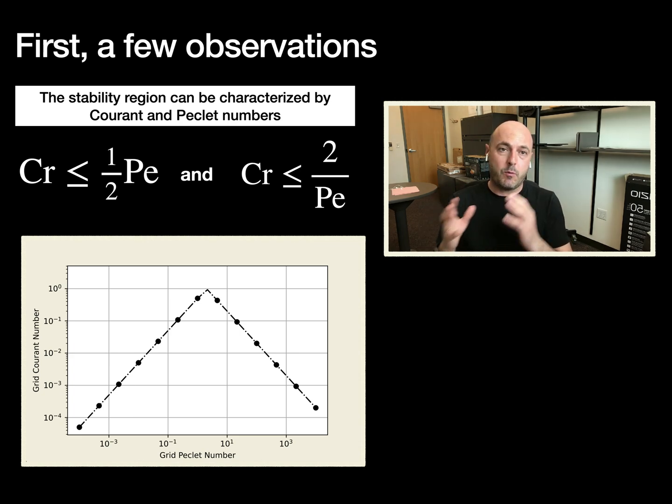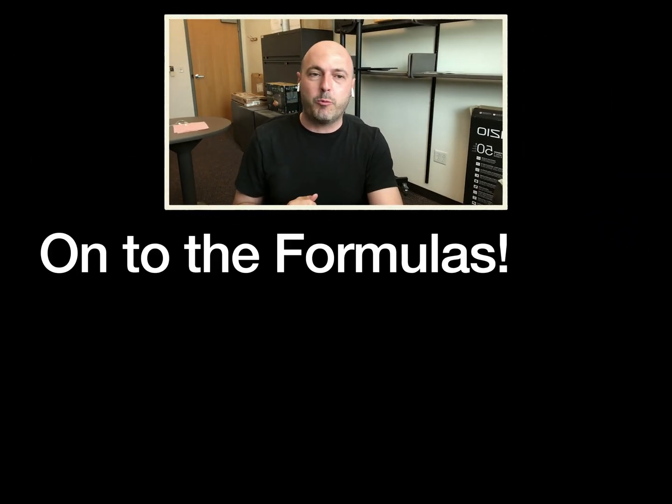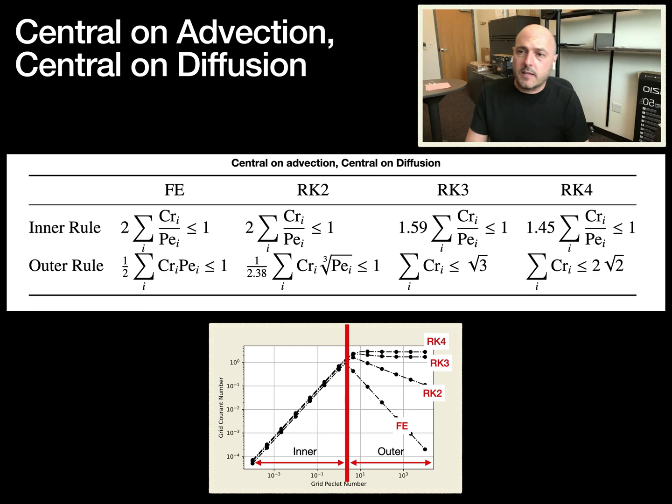In practice, the way we're going to apply this is that in a simulation, as the advection velocity changes, your Peclet number is going to change, and therefore you're going to move between different points on this plot. Now, on to the formulas. First, we will start with central advection and central diffusion discretization.